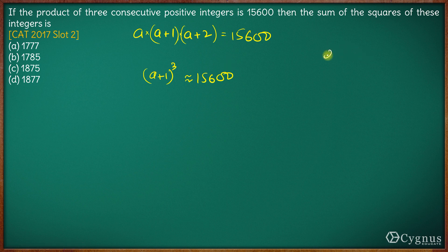20³ is 8000. And what is 30³? 30³ is 27000, but we want 15600, so 15600 will be somewhere in between 20 and 30 cube.